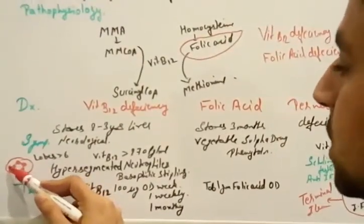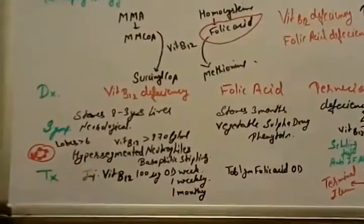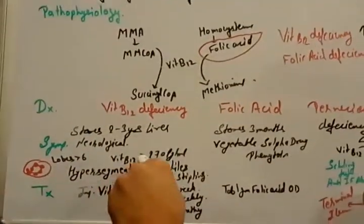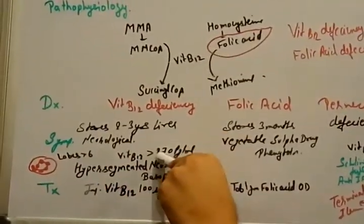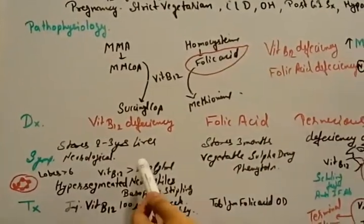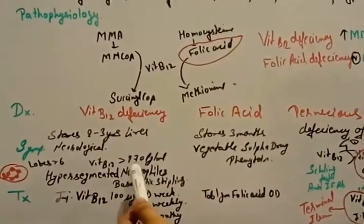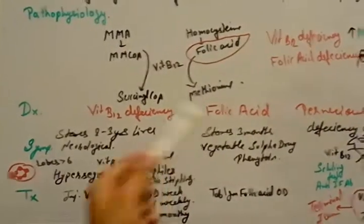1, 2, 3, 4, 5, 6, 7. 7 hypersegmented neutrophils. We see here. And vitamin B12 level sufficient is more than 270. Till 1000 it's normal level. Below 270 it's deficiency and severe insufficiency is less than 100.